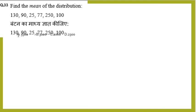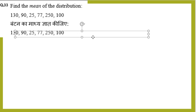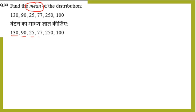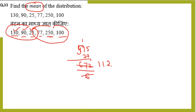Question 33: Find the mean of the distribution. The mean formula is sum of observations divided by number of observations. So we have 130 plus 90 plus 25 plus 77 plus 250 plus 100 equals 672. Divide by 6 observations. The mean is 112.